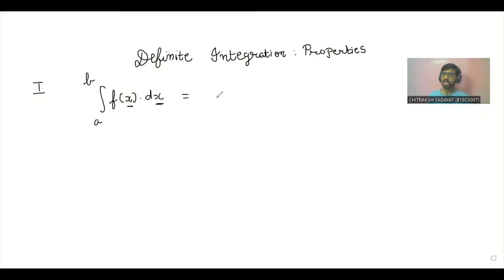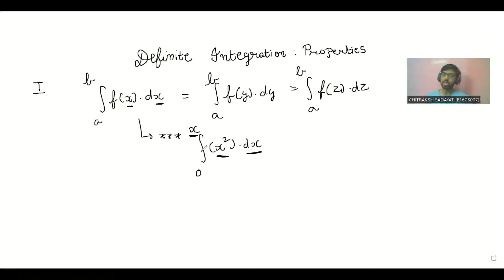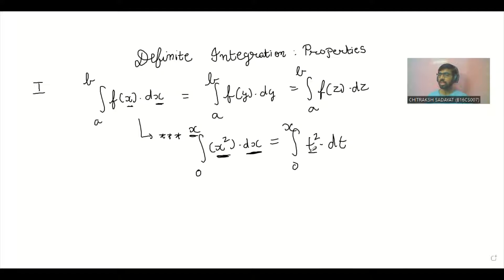The first property is about the dummy variable. Consider the integral of x² dx — the x in the integrand and the x in the limits are not the same variable. After we write the definite integral from 0 to x of t² dt, the variable is just a letter that has been changed. This substitution is completely different from indefinite integration — here we just change the variable for a specific letter.